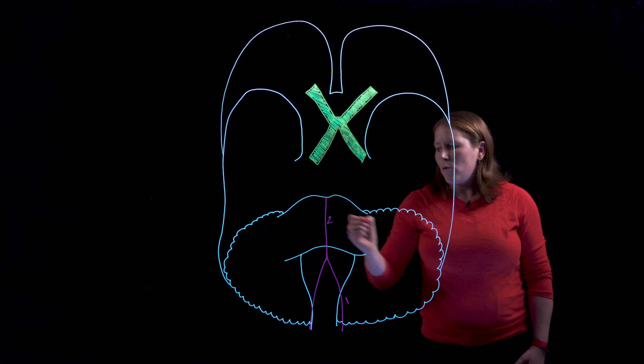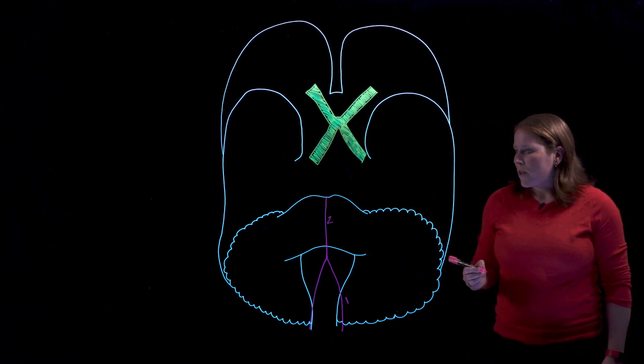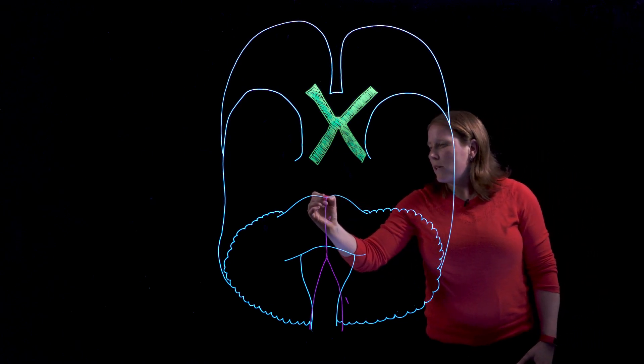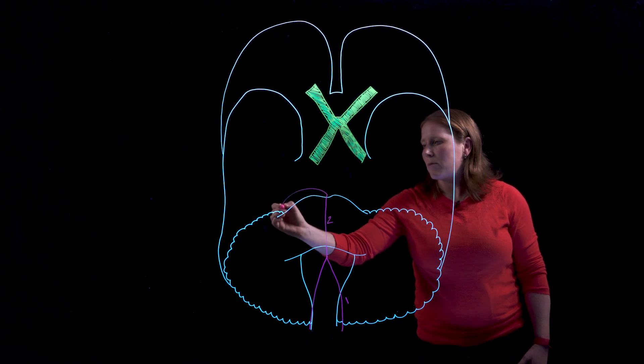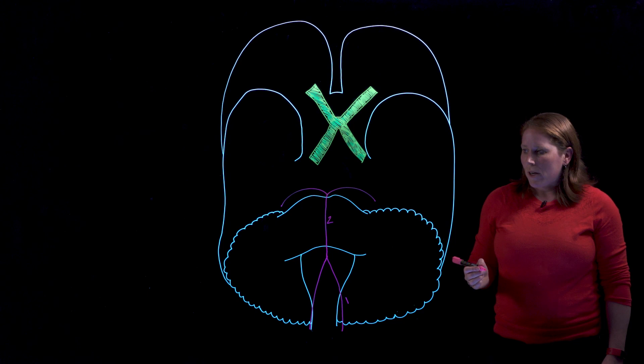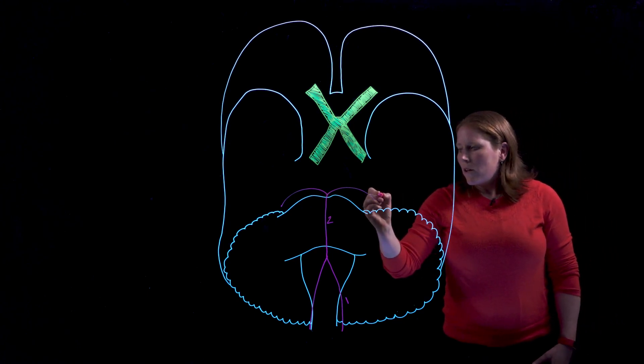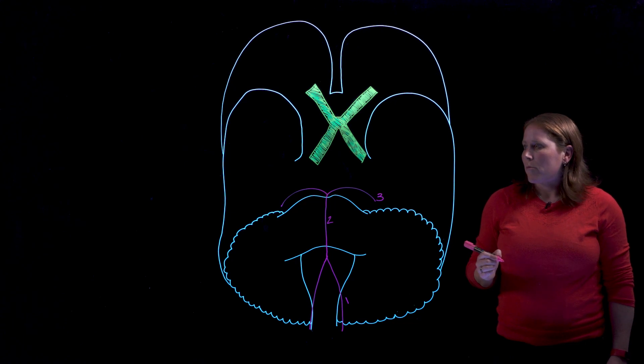Number two which lies directly on the ventral surface of the pons is the basilar artery and the basilar artery is only a single midline structure for so long because ultimately it is going to split again just as it enters the area of the midbrain.